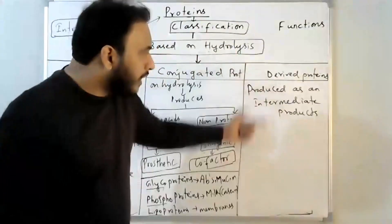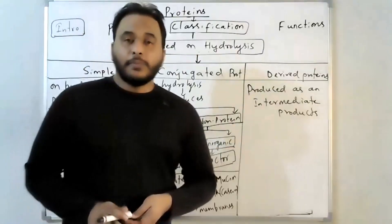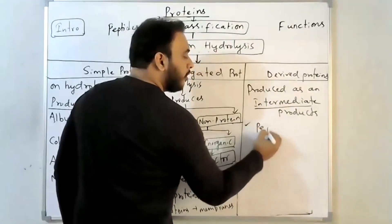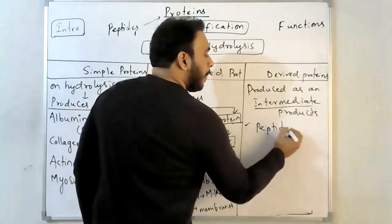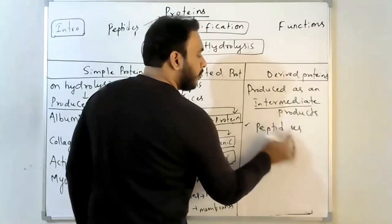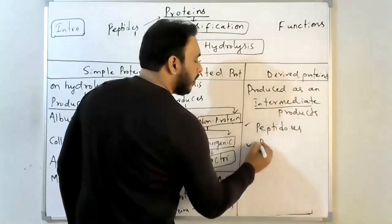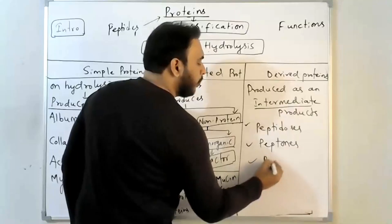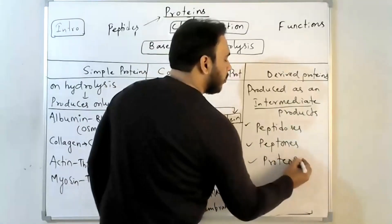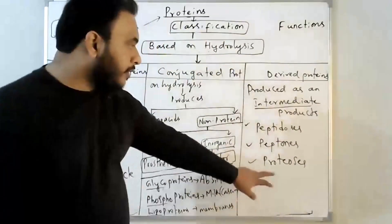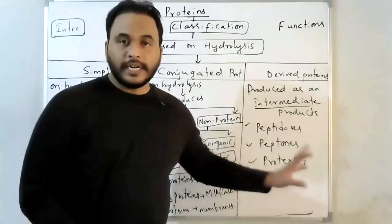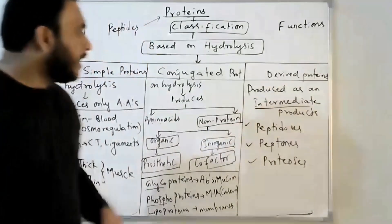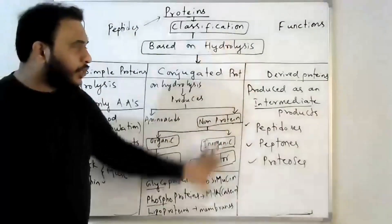Derived proteins are produced as intermediate products during the digestion process. Examples include peptidases, peptones, and proteoses — produced as intermediate products during digestion. This is the classification of proteins.